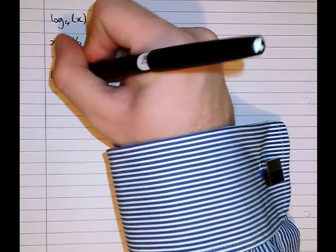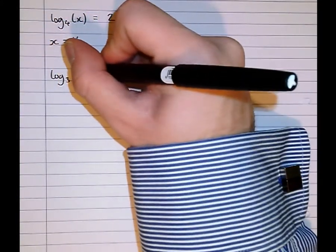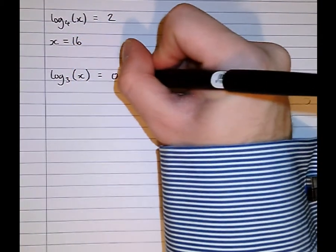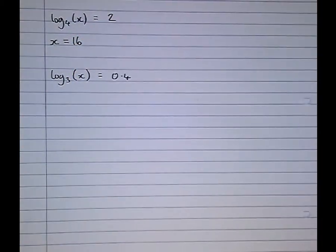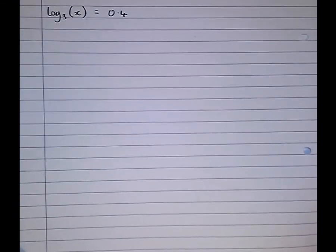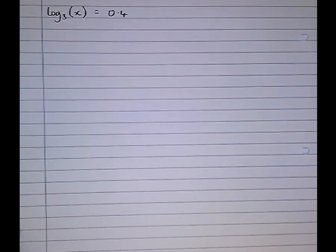But sometimes they're not that simple. For example, log to the base 3 of x equals 0.4. Now there's no obvious answer to that particular equation so we're going to go through the theory now of how to solve that.